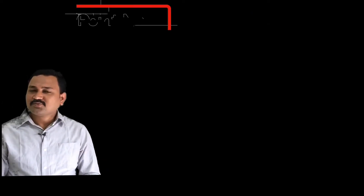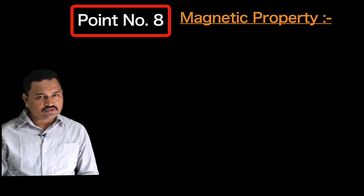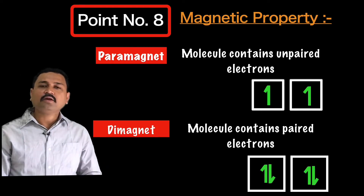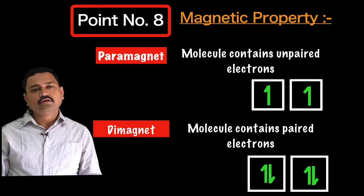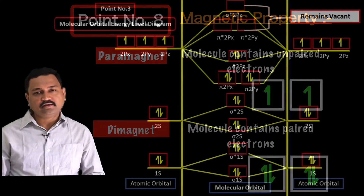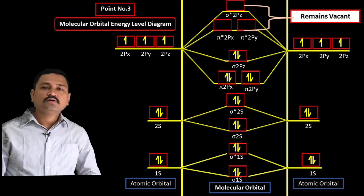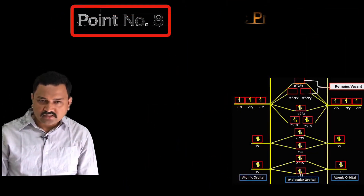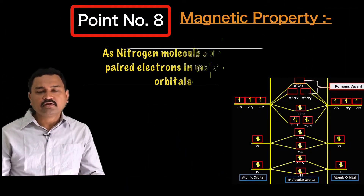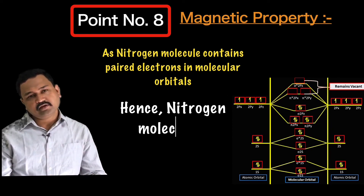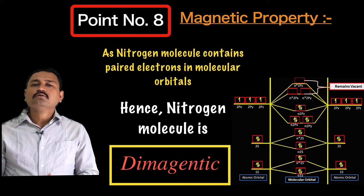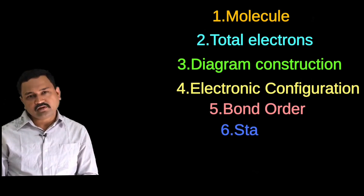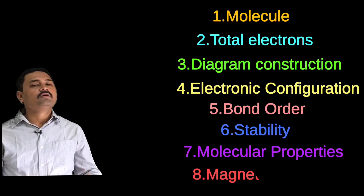Point number eight: the magnetic property of nitrogen molecule. If a molecule contains unpaired electrons, it behaves as a paramagnet; if it contains only paired electrons, it behaves as a diamagnet. All 14 electrons distributed in the molecular orbital energy level diagram of N₂ are paired. Hence, nitrogen molecule is diamagnetic in nature. These are the eight points by which we can explain the formation of nitrogen molecule using molecular orbital theory.